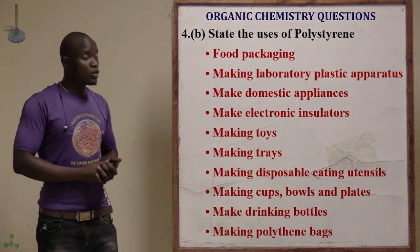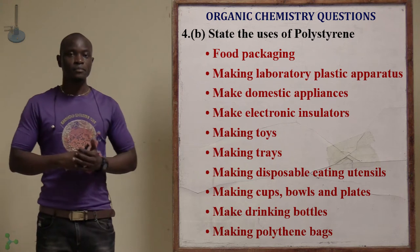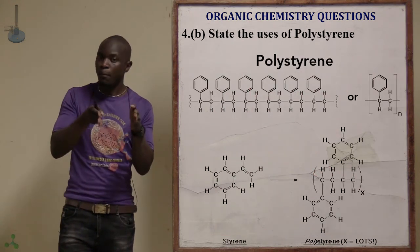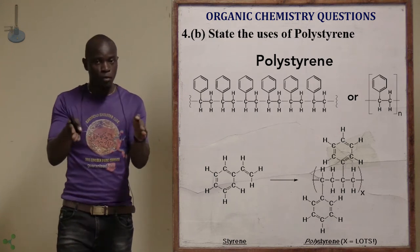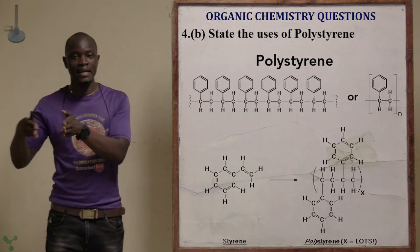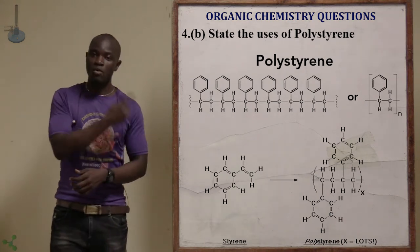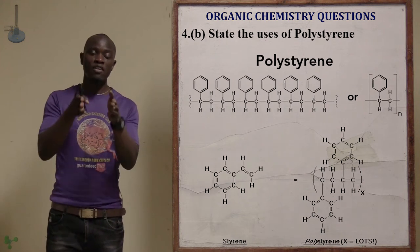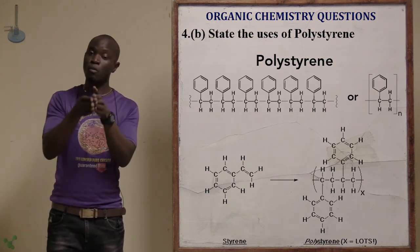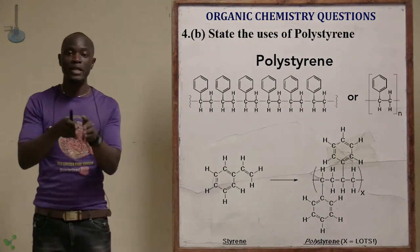Question B asks to state the uses of polystyrene. From the word 'poly,' this is a polymer — a polymer of styrene. We have styrene from the benzene ring, and we have made many chains of styrene, giving us polystyrene.